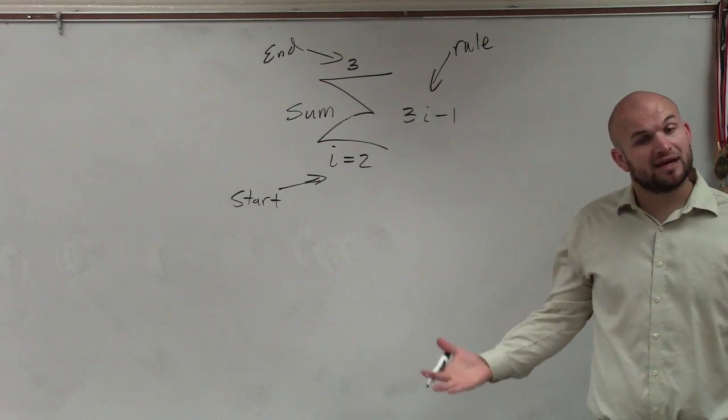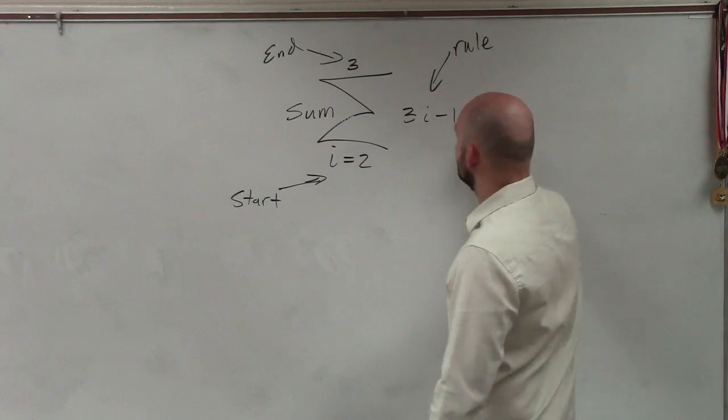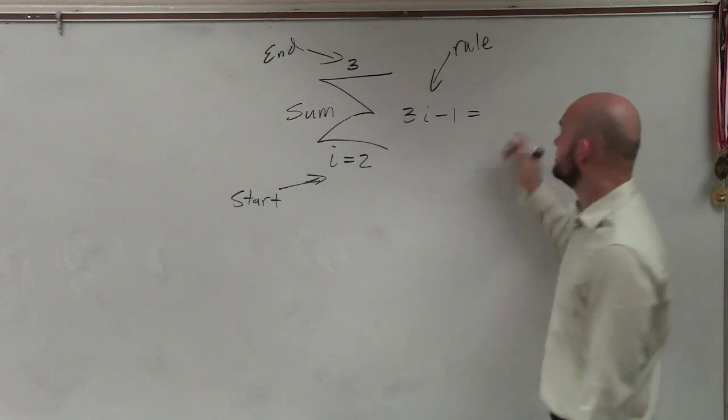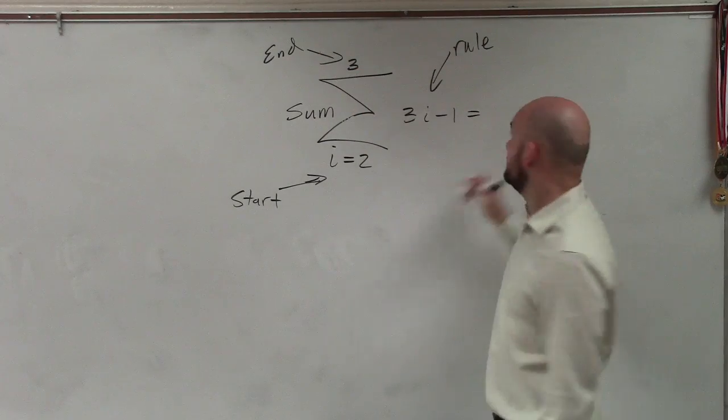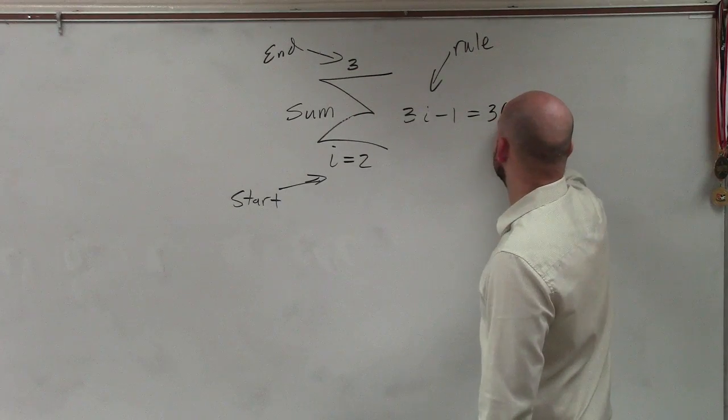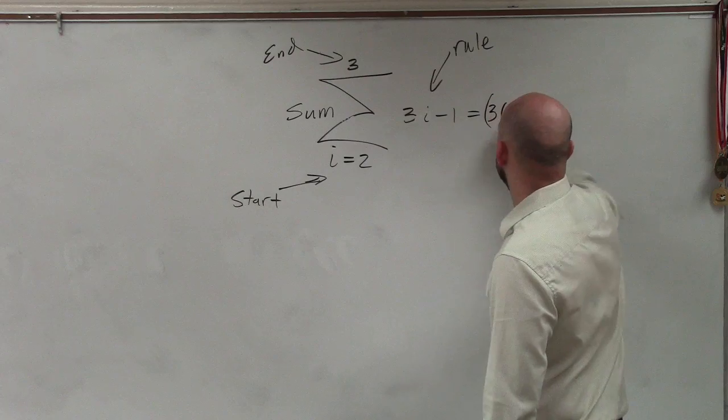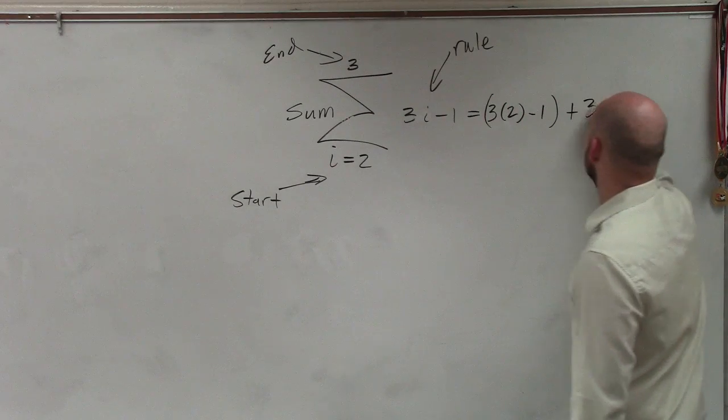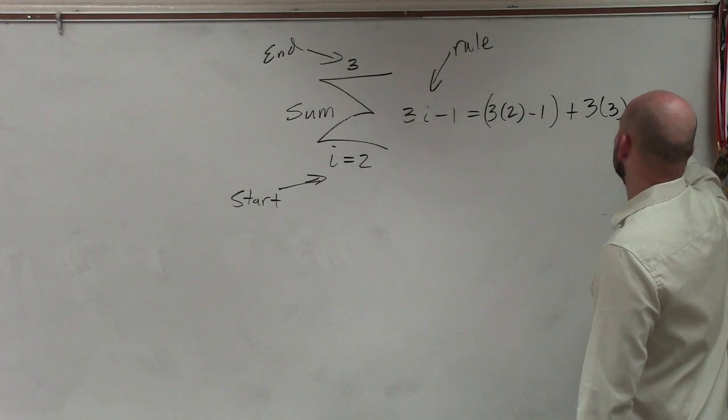So to evaluate the sum, what we're simply going to do is start at whatever i is. And then you're going to end at your value here. So for this case, I have 3 times 2 minus 1 plus 3 times 3 minus 1.